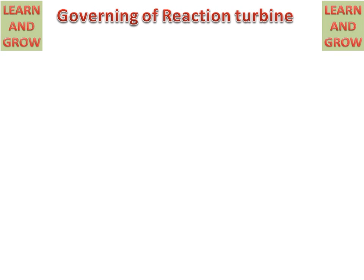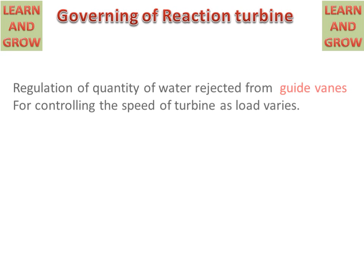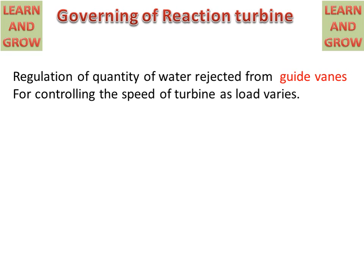Today we will discuss the governing of reaction turbines — how governing of a reaction turbine works for maintaining flow rate. We know that regulation of the quantity of water discharged from guide vanes is key. In the case of a reaction turbine, we use guide vanes for controlling the speed of the turbine as load changes, whereas in impulse turbines these guide vanes are replaced with nozzles. We have to regulate water discharged from guide vanes — this is the governing of the reaction turbine.